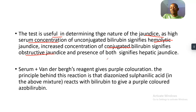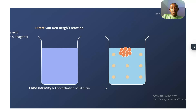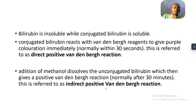In the reaction, when you add Van den Bergh reagent to serum, it gives a purple coloration. The principle behind this reaction is that the diazotized sulfanilic acid in the reagent reacts with bilirubin to give the purple color. This is a diagram of the Van den Bergh reaction.